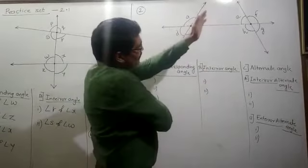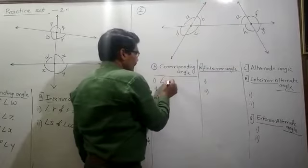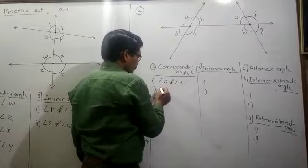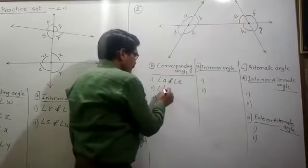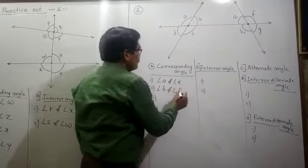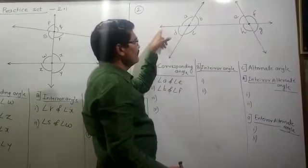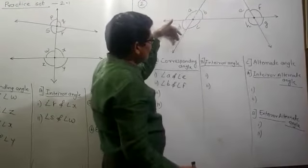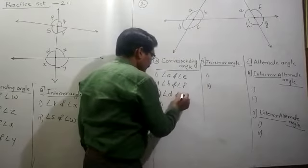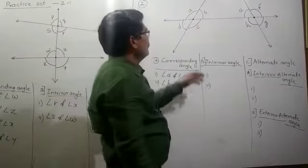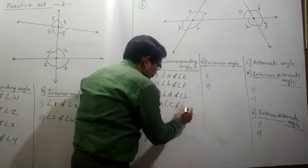When you turn the figure, the corresponding angle pairs are: angle A and angle E, angle B and angle F, angle D and angle H, and angle C and angle G. So the four pairs of corresponding angles for this diagram are angle A–E, angle B–F, angle D–H, and angle C–G.